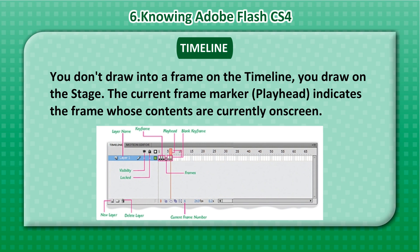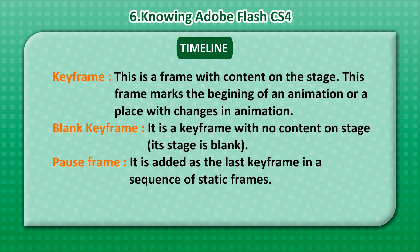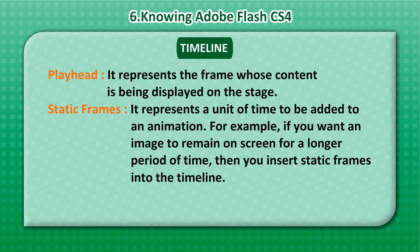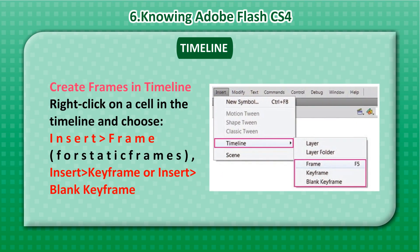A Keyframe is a frame with content on the stage; it marks the beginning of an animation or a place with changes in animation. A Blank Keyframe is a keyframe with no content on stage — its stage is blank. A Pause Frame is added as the last keyframe in a sequence of static frames. The Playhead represents the frame whose content is being displayed on the stage. A Static Frame represents a unit of time added to an animation — for example, if you want an image to remain on screen longer, you insert static frames into the timeline.